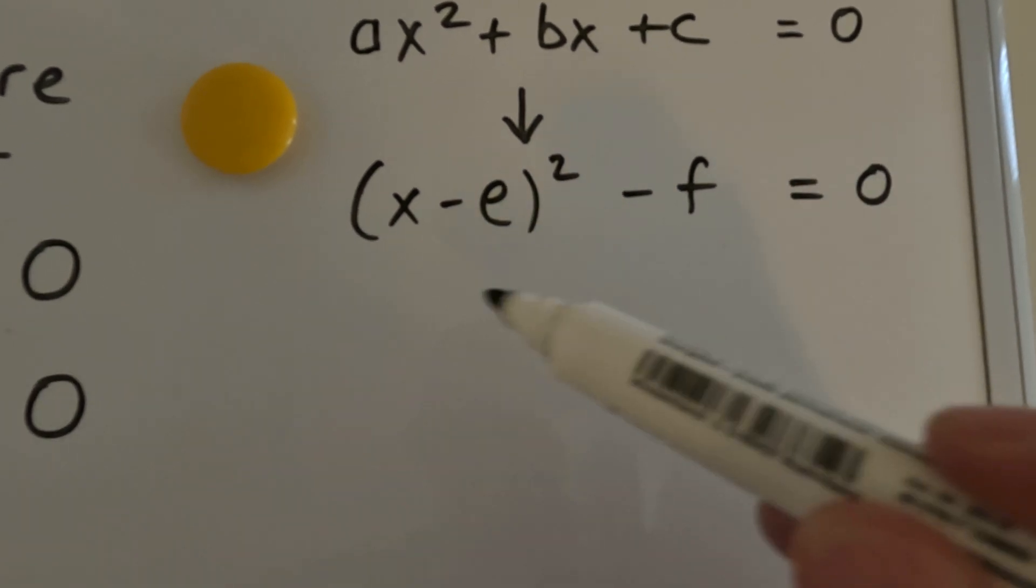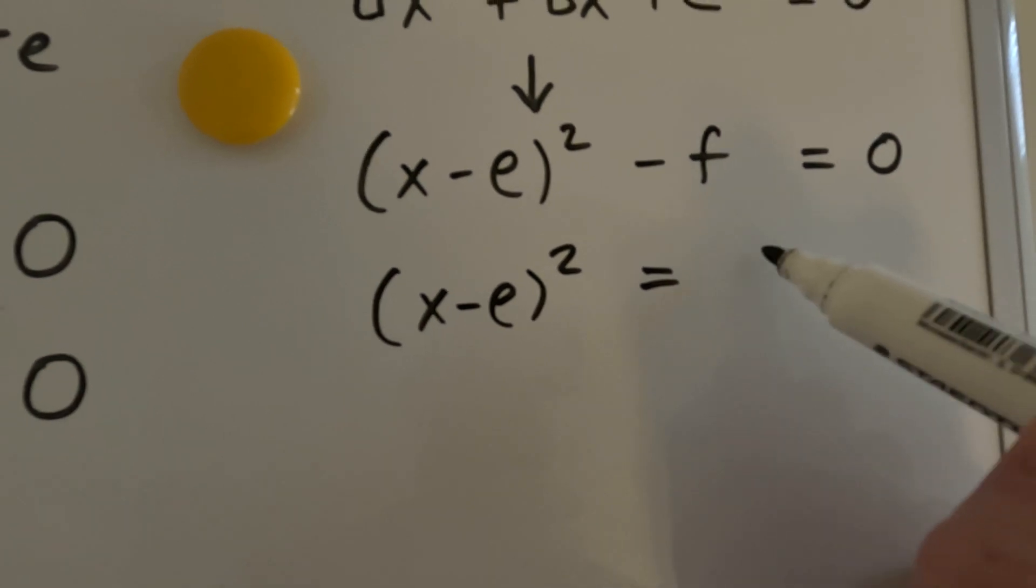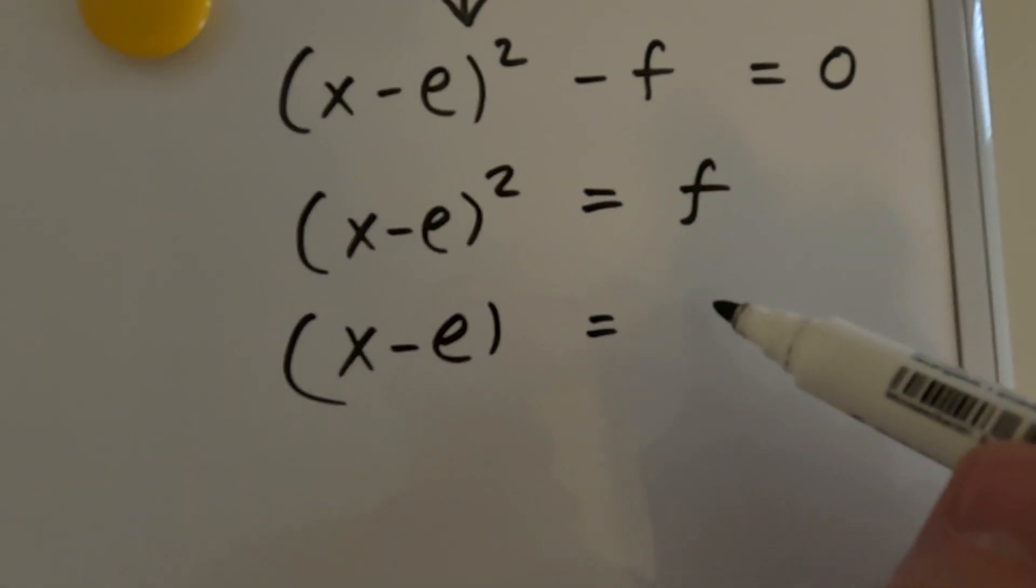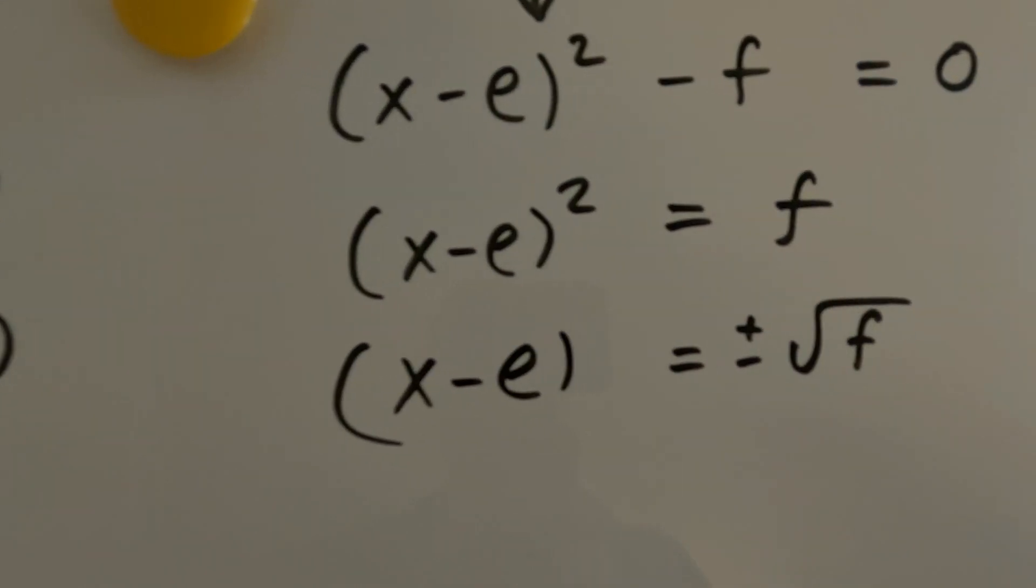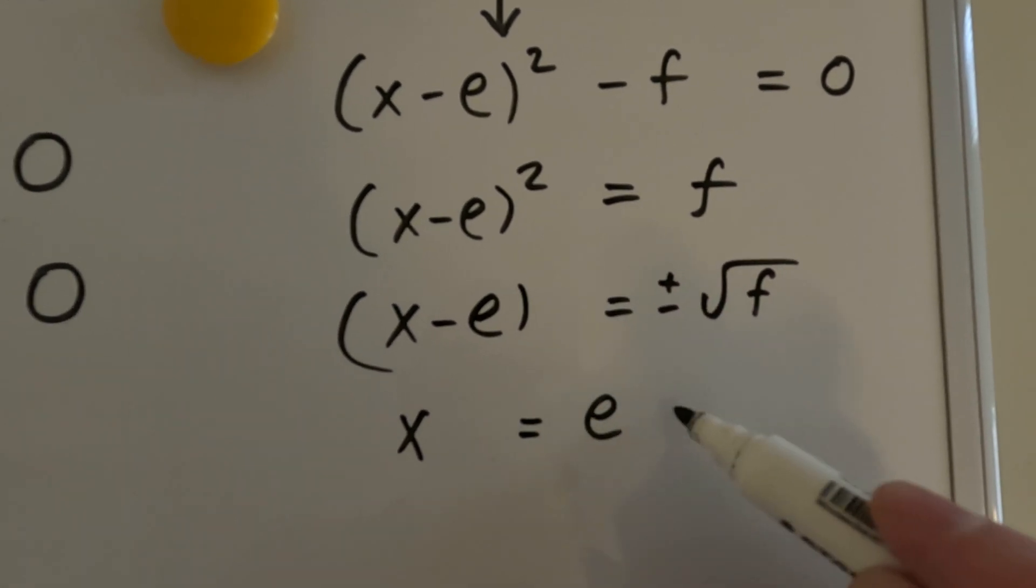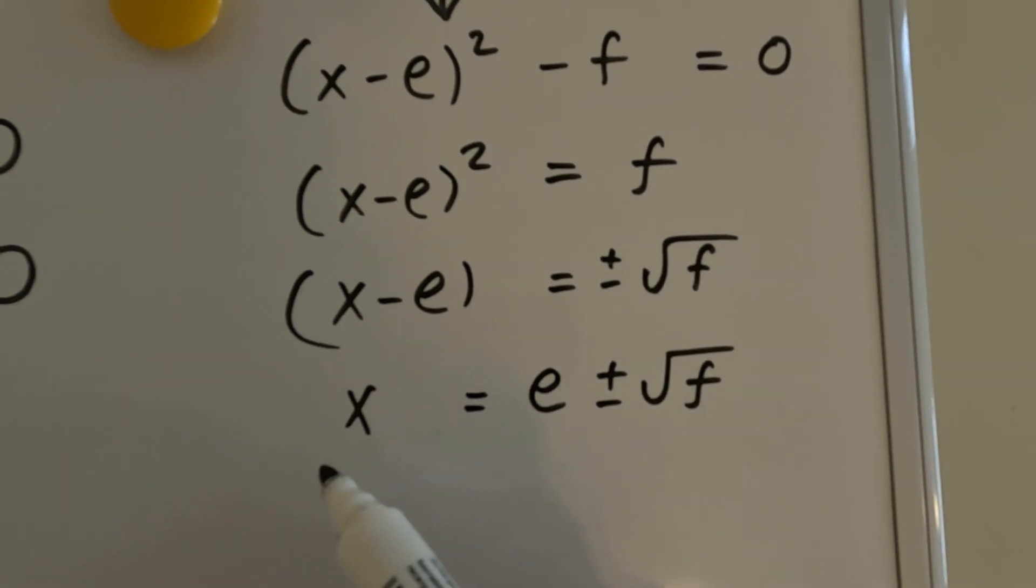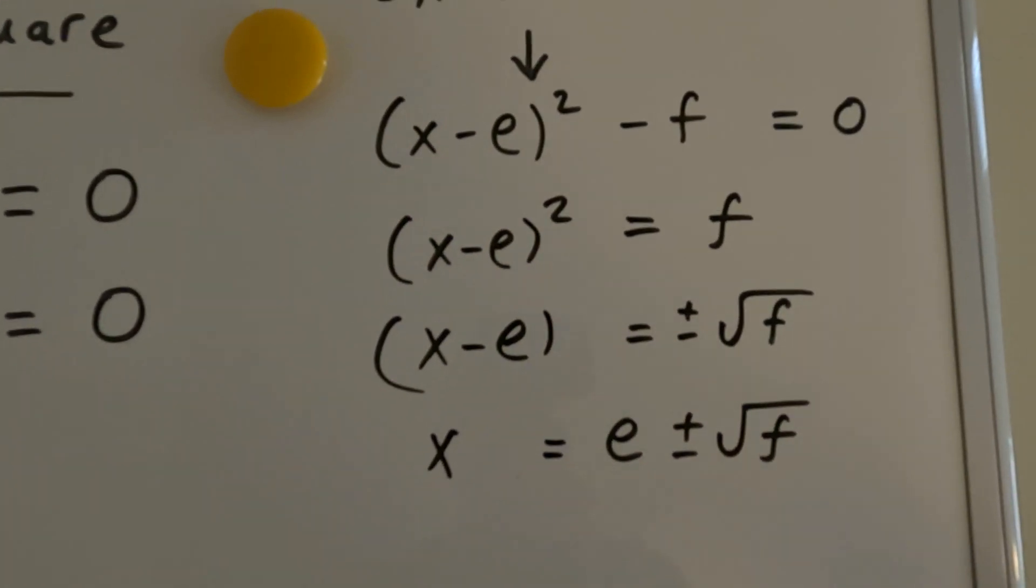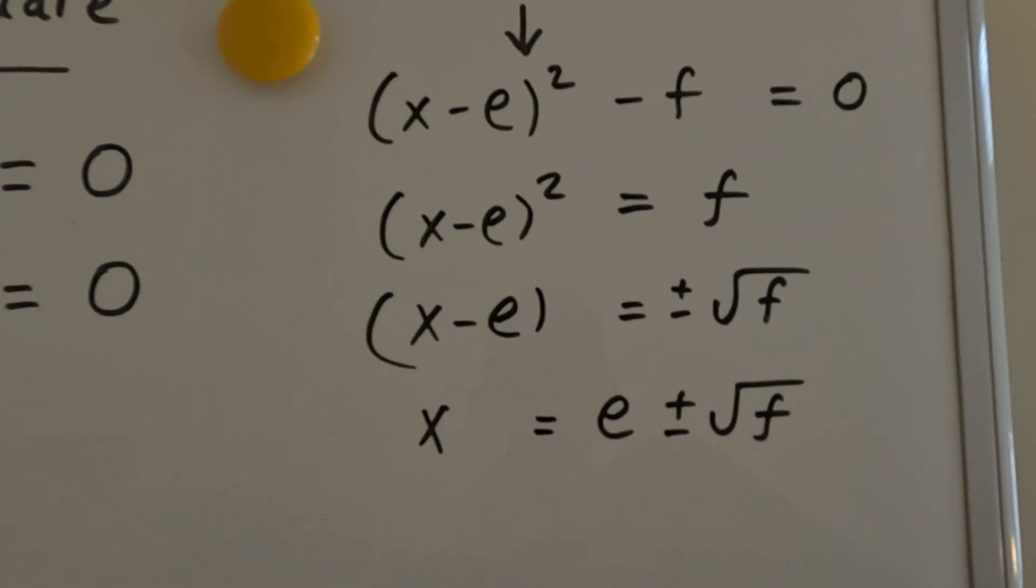And let's just quickly do this bit. So x minus e squared equals f, obviously. So then if we take square roots is equal to the square root of f. But remember, there's two solutions when you take a square root. You can have the positive or the negative of the square root. And then x is equal to e plus or minus the root of f because we just take the e over to the other side. And that's it. There's our solution for x. There's the two roots of x for a quadratic equation. We've solved it. So x is equal to e plus or minus the root of f. So once we know e and f, we've got our answer.